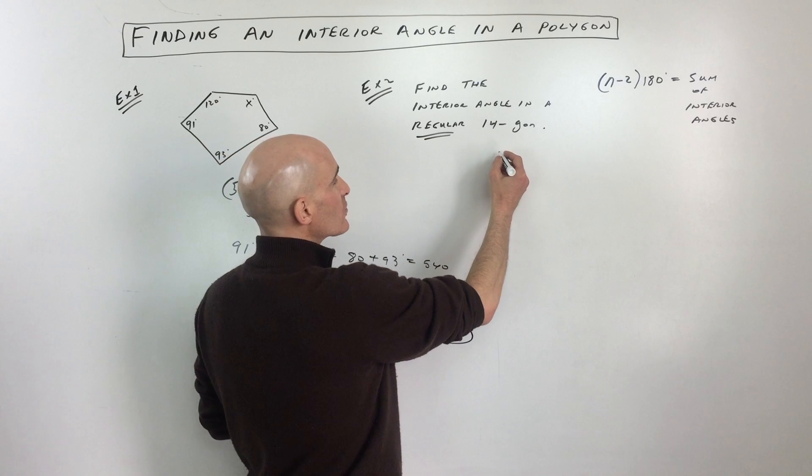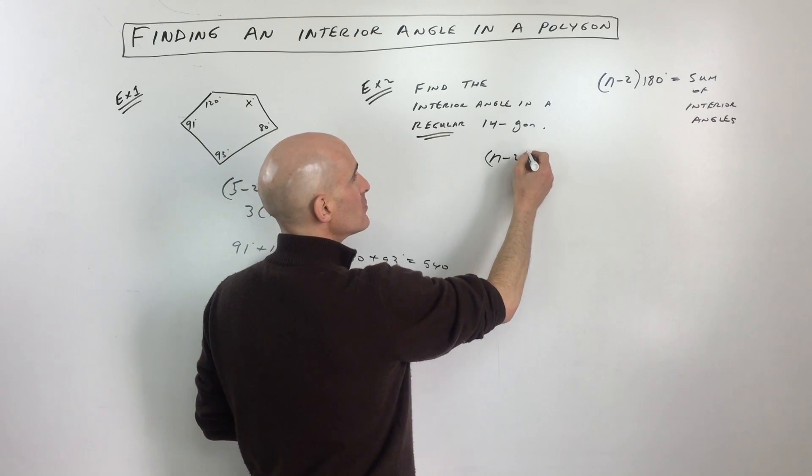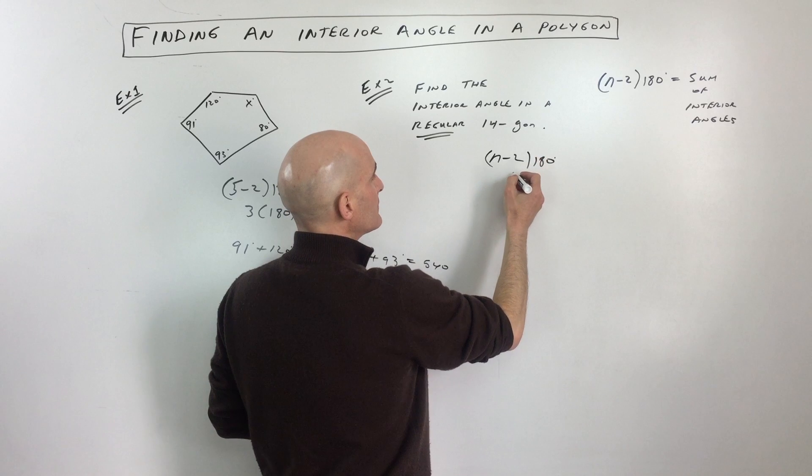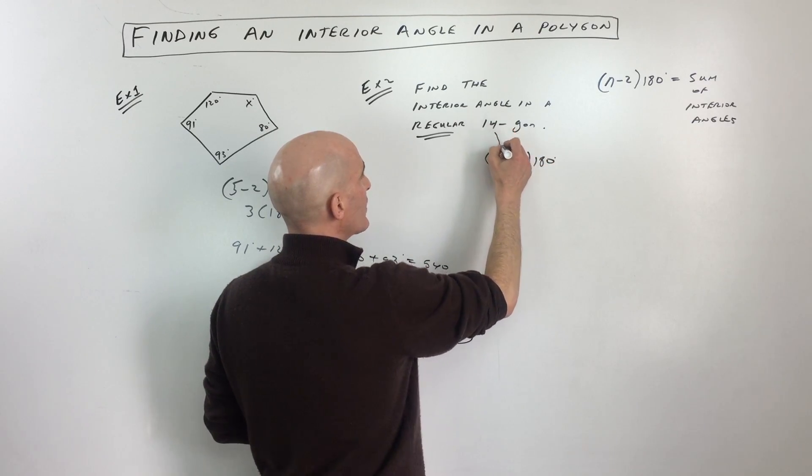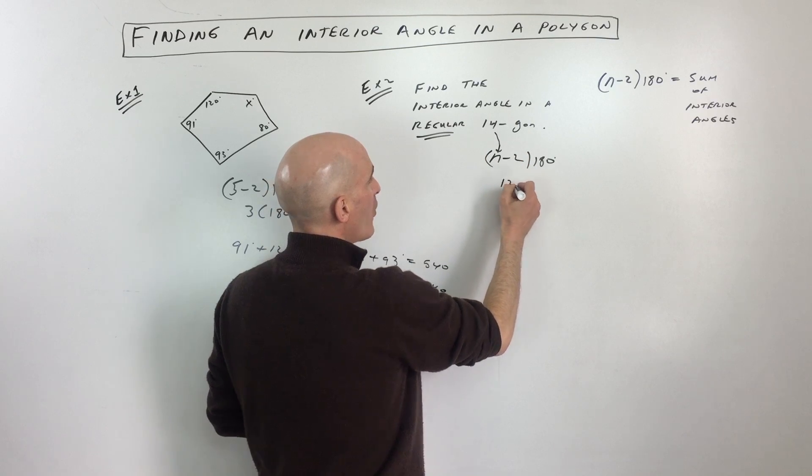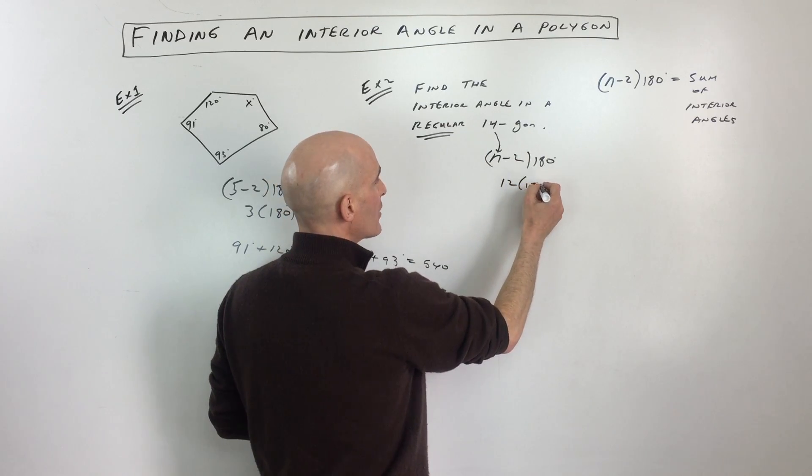So what we're going to do is we're going to do this a couple different ways. We're going to do n minus 2 times 180. In this case, it's 14, so I'm going to put 14 right there. So we've got 12, 14 minus 2 is 12, times 180.